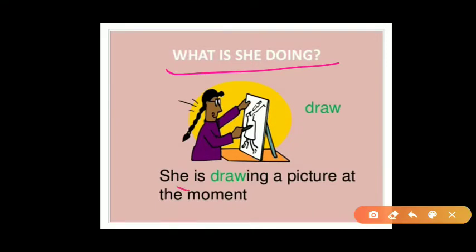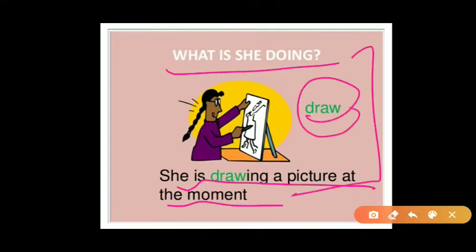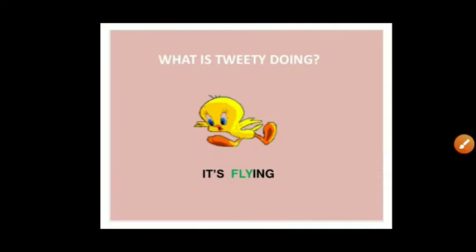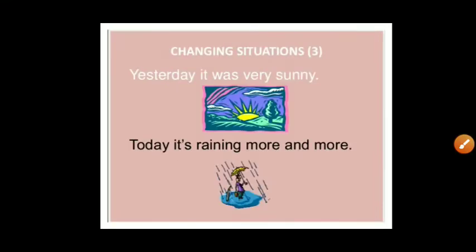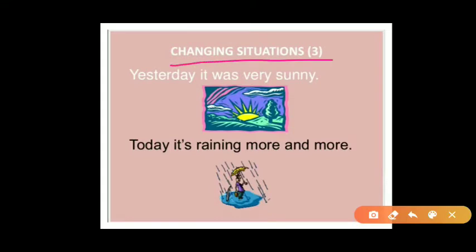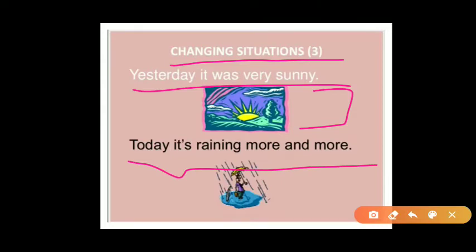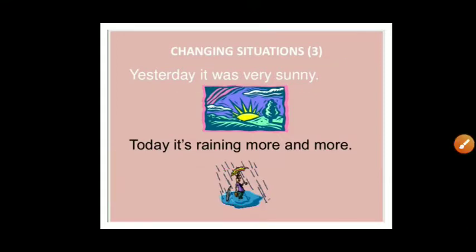In another picture, at the moment she is drawing a picture. Drawing is a continuous action. When you ask her 'What are you doing?' she says 'I am drawing a picture.' If you ask Tweety 'What are you doing?' Tweety says 'I am flying.' We also use present continuous for changing situations — for example, yesterday it was very sunny but today it is raining more and more. To describe the current changing situation, we use present continuous tense.